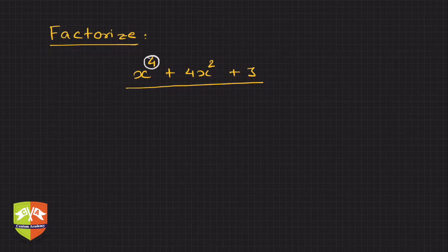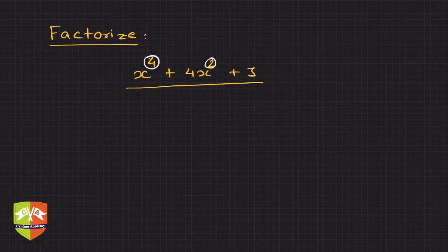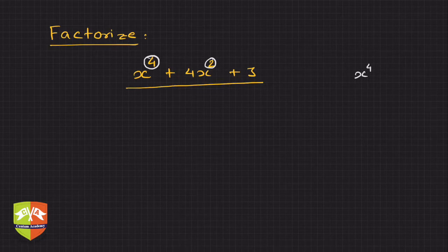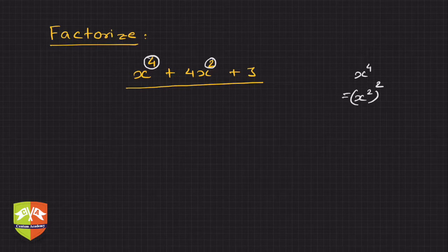Now the moment we see powers like 4, it gives us a lot of trouble, doesn't it? How to resolve it? Always remember, x to the power 4, whenever you see such expression, it is nothing but x squared squared. If you keep this in mind, then it becomes much easier.